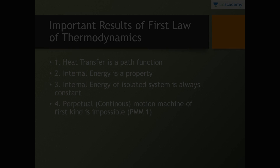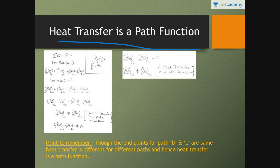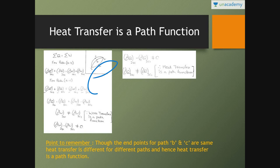Here is the first result: heat transfer is a path function. Consider two reversible cycles — 1A2B1 and 1A2C1. For a cycle, sigma Q equals sigma W, meaning net heat transfer equals net work transfer. For cycle 1A2B1, the total heat transfer through process A plus total heat transfer through process B equals total work transfer through process A plus total work transfer through process B.